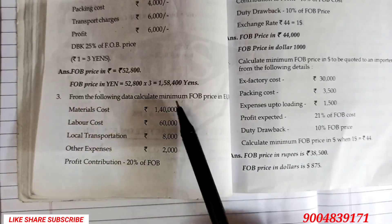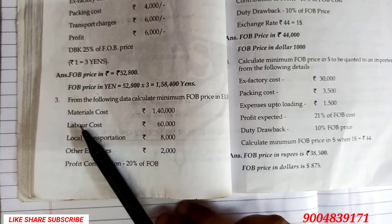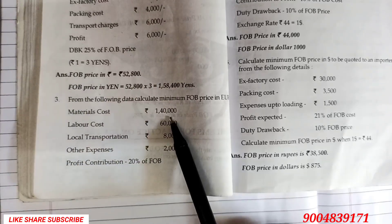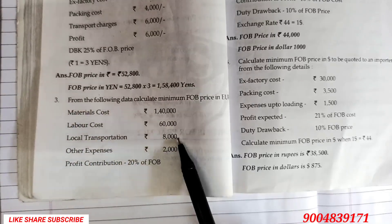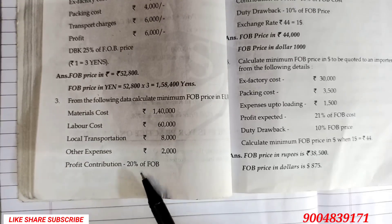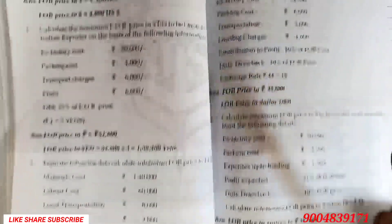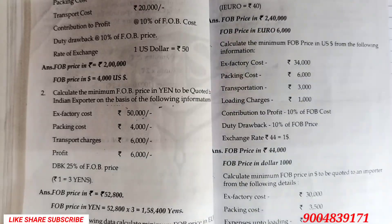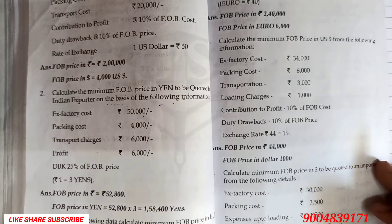The question is: from the following data, calculate the minimum FOB price in euro. Material cost is 1,40,000, labor cost is 60,000, local transportation 8,000, and other expenses 2,000. Profit contribution is 20% on FOB cost, and drawback of duties is 5% of FOB price. We have to calculate FOB price in rupees, then convert into euro.